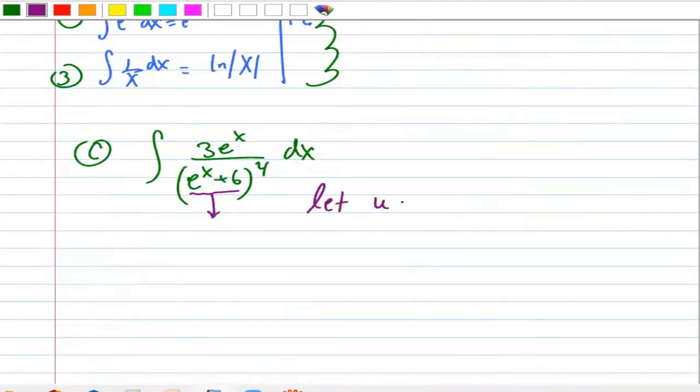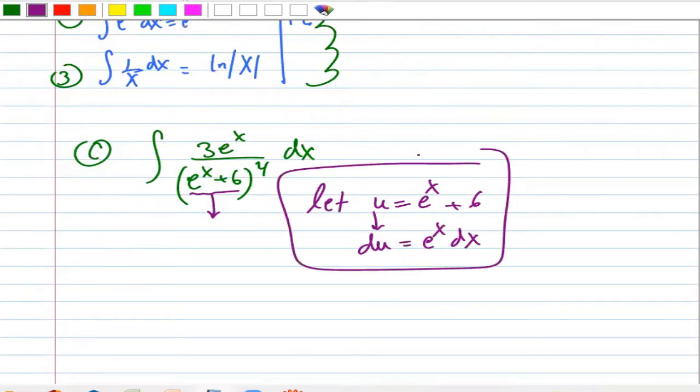So let u equals e to the x plus 6. If you derive it, you get the one below. So again, replace what you see. The first step is always setting up the u, and then you should derive it. Next step, always those in the box should be determined, then you go back and figure out how you replace.